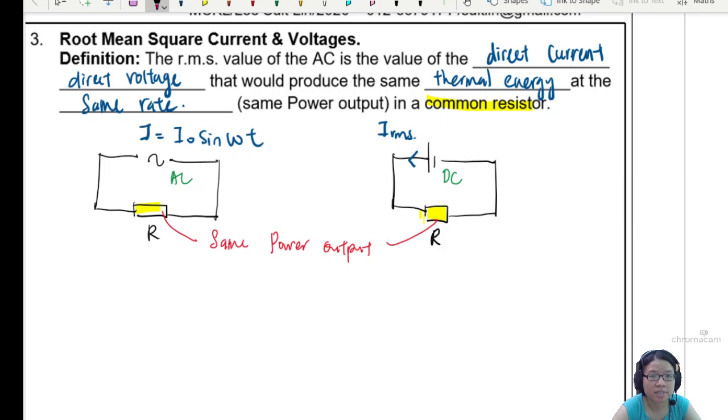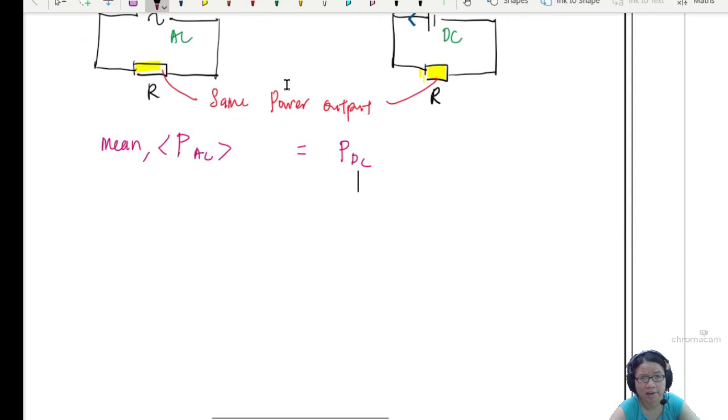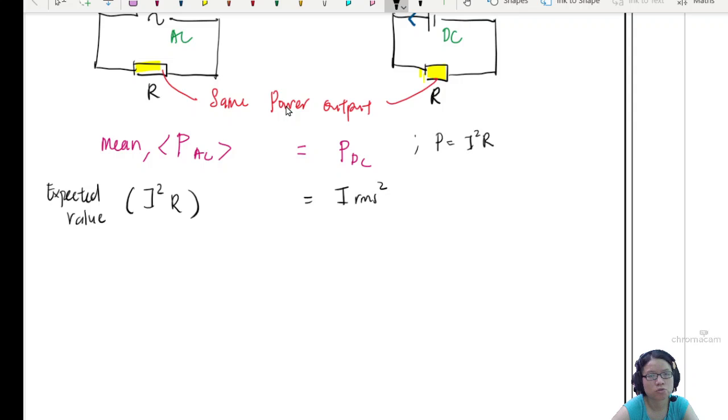So I will start with that. I will say that the power of the AC or the mean power of AC will be equal to the power in the DC circuit. DC have no mean power, it will have a consistent voltage. I'm also going to use the equation P equals I squared R. So in this side here, this will be the expected value of I squared R.